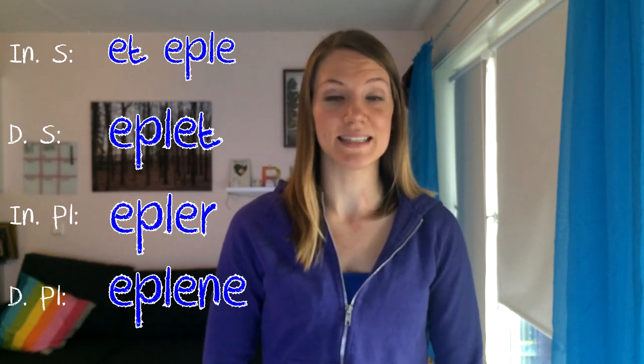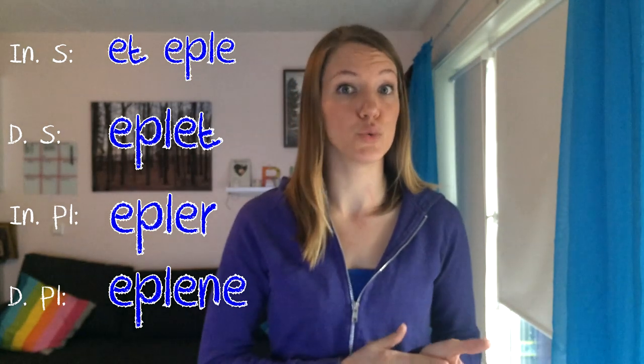And then you have the words with two syllables or more, like an apple — et epple. The forms are: eppler, epplene. In definite form you have an 'et' ending — epple. You can hear you don't actually say the 'T' very strongly.